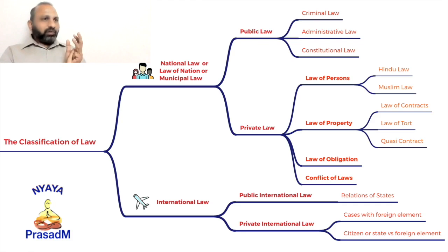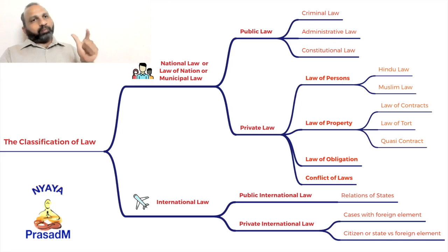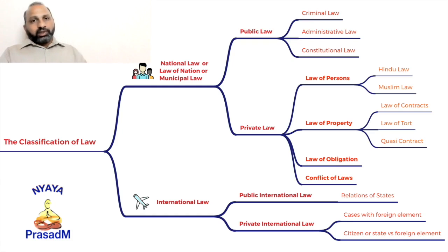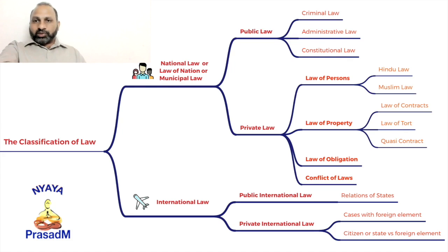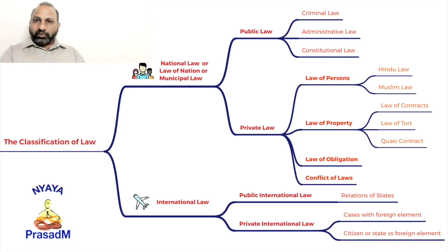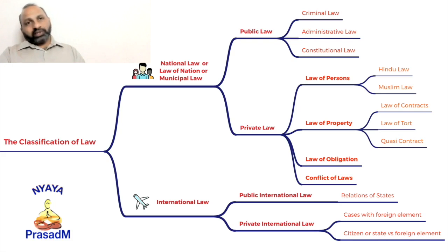So classification of law is very simple — there are only two types of laws: public law and private law. From a high level, public law is international law, and private law is national law or municipal law. Within the law of nation, private law deals with personal laws such as Hindu law, Muslim law, or Christian law, as well as law of property, law of contracts, quasi-contracts, and so on.